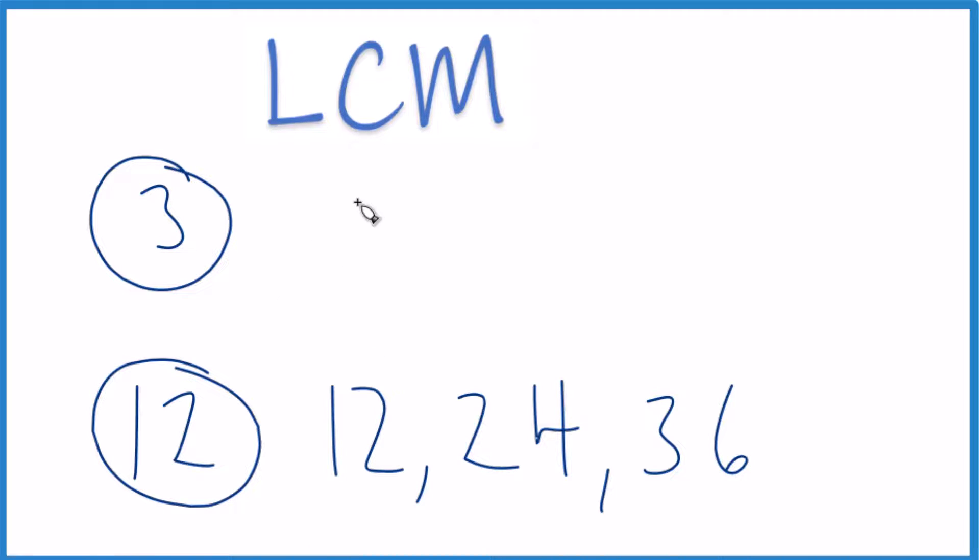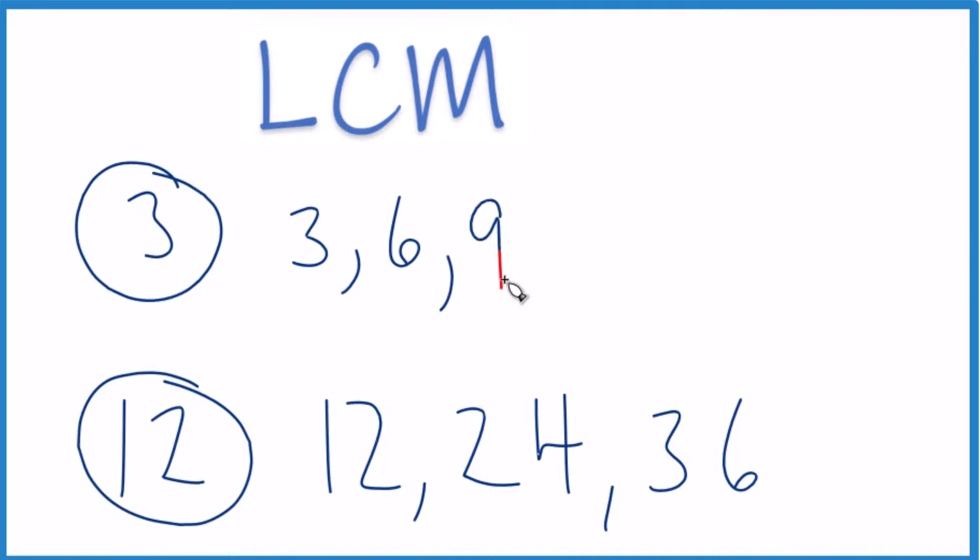We can list the multiples of 3. So you could say 3 plus 3 is 6. 6 plus 3 is 9. 9 plus 3 is 12. And there it is.